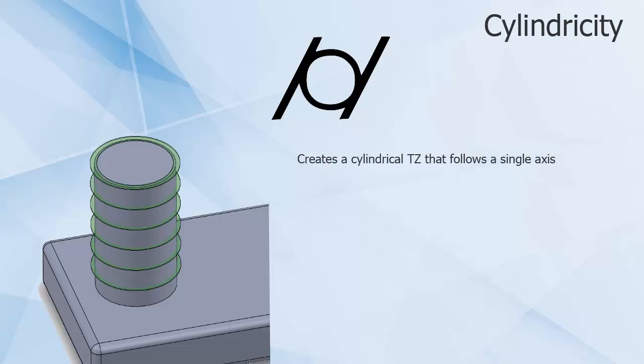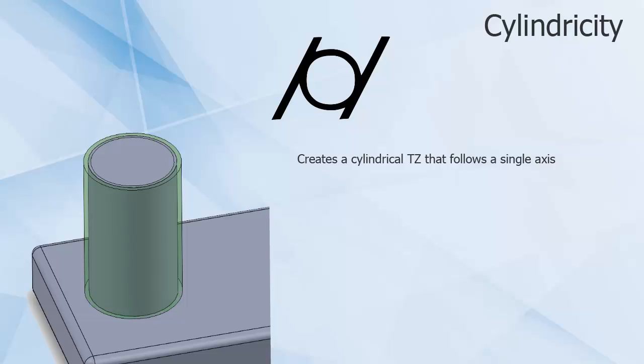The TZ created is not a flat circular cross-section, but a cylindrical TZ carried down an entire axis. Another description of the cylindricity TZ is that it is like flatness wrapped into a tube.